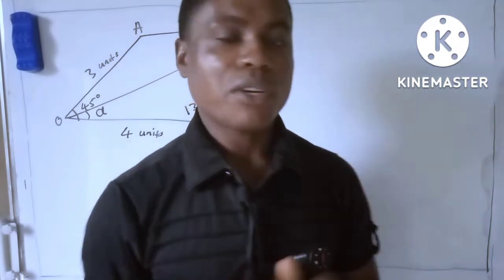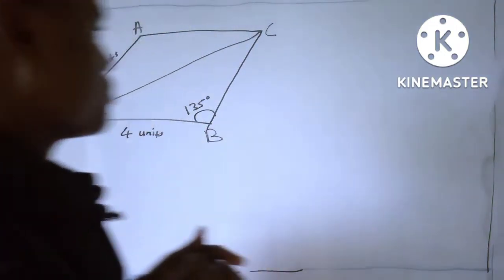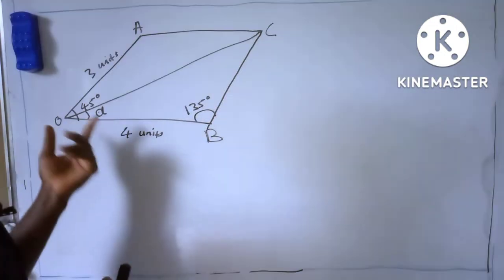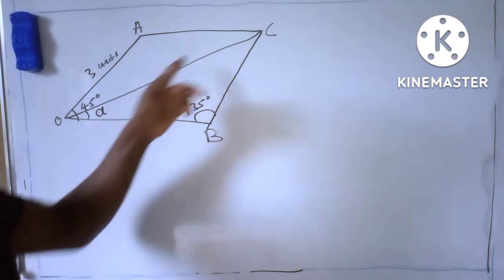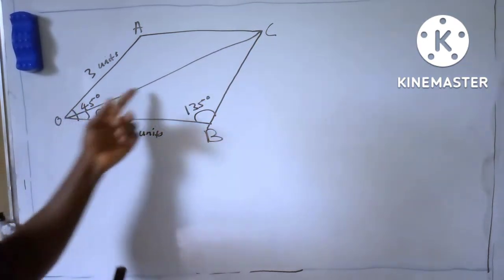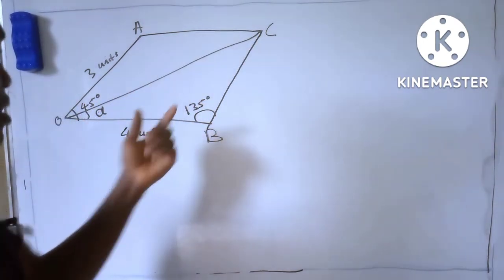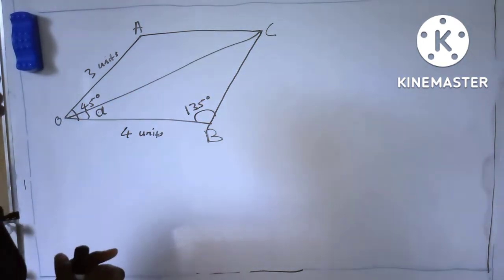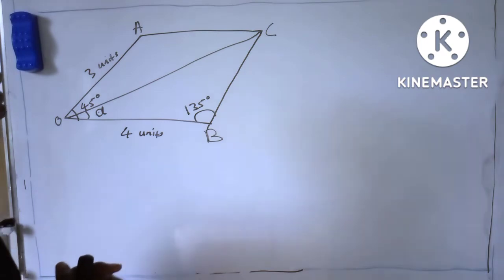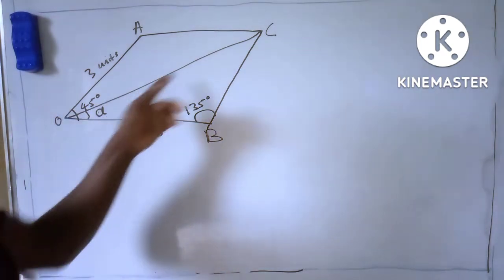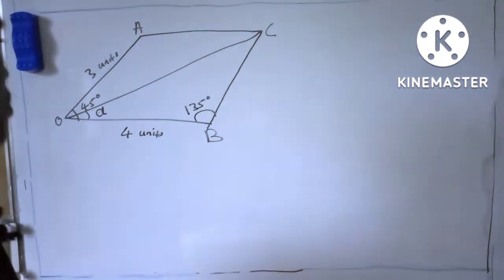Hi guys, welcome back to my channel. This is a parallelogram and we are asked to find OC, which is the resultant, and this angle here, which is our direction. So let's first of all find the resultant.